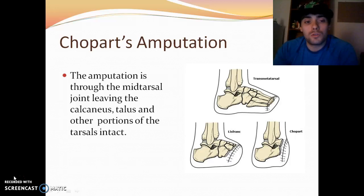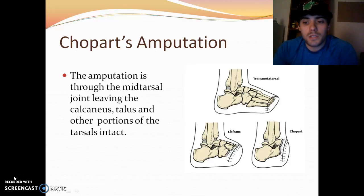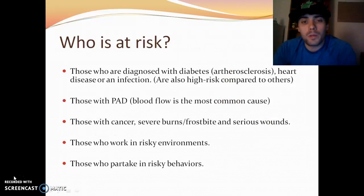Chopart's amputation is through the mid-tarsal joint. It leaves the calcaneus, the talus, and other portions of the tarsals intact, also producing a stump that is better for weight-bearing.